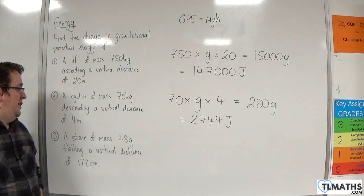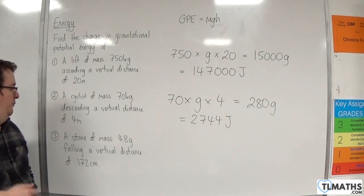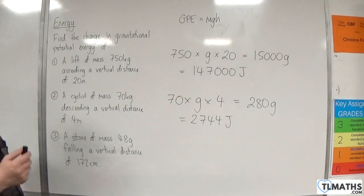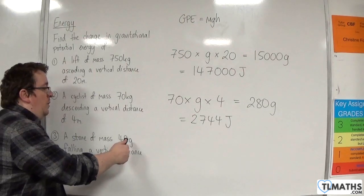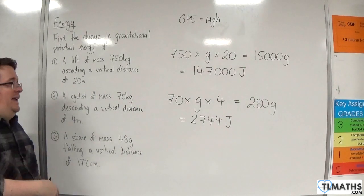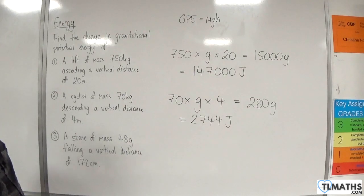For number three, a stone of mass 48 grams falling a vertical distance of 172 centimeters. Now, the point of this question is to make sure that we're putting in the correct units into our formula. The mass needs to be in kilos, the height needs to be in meters.